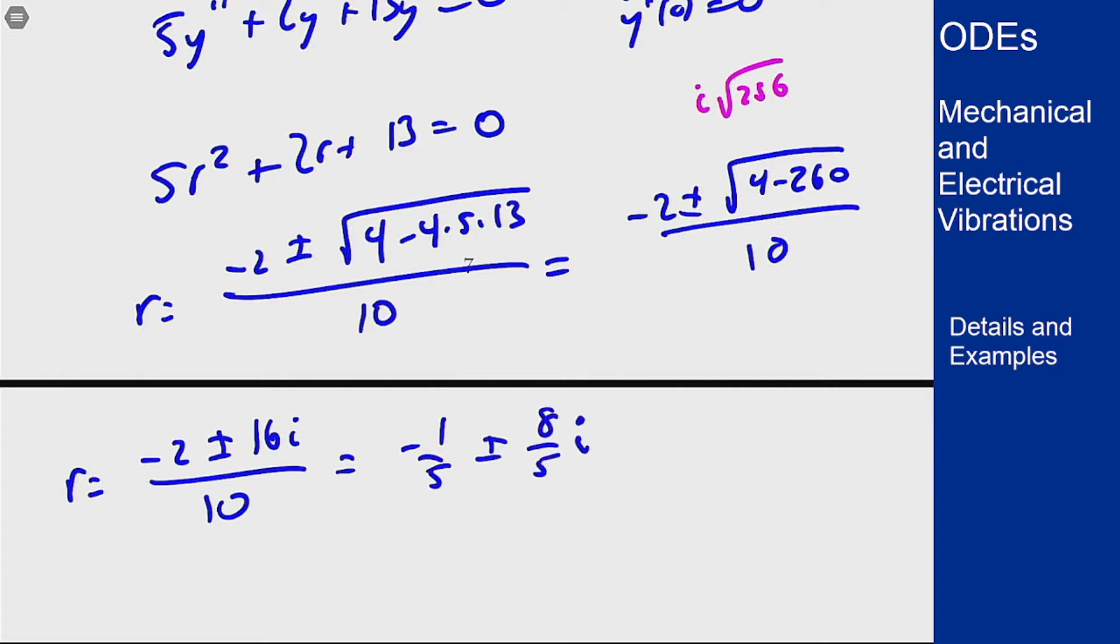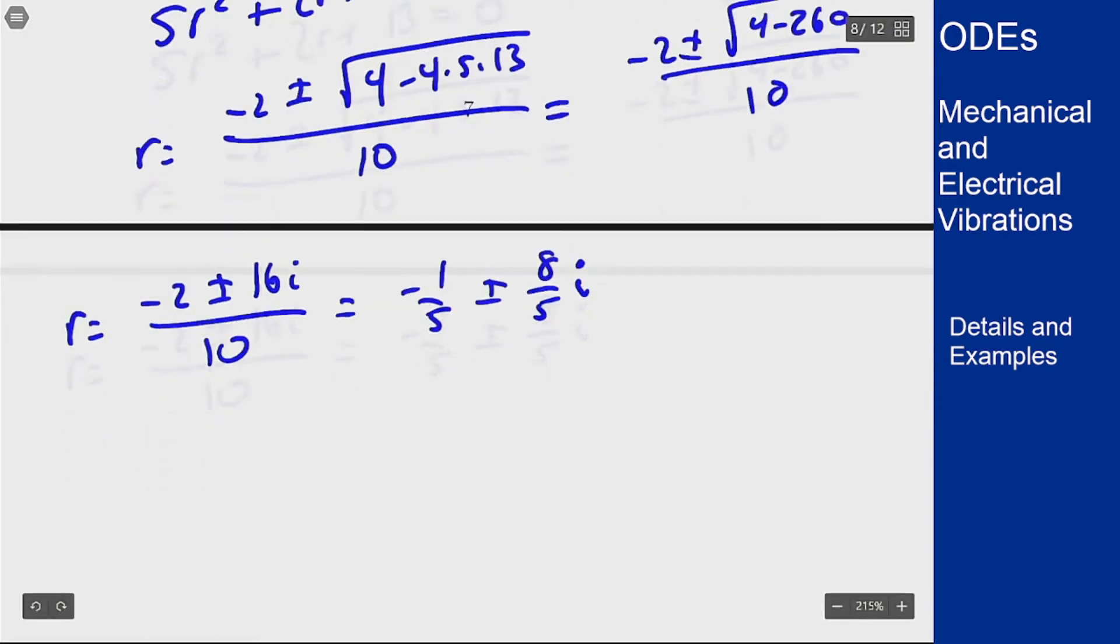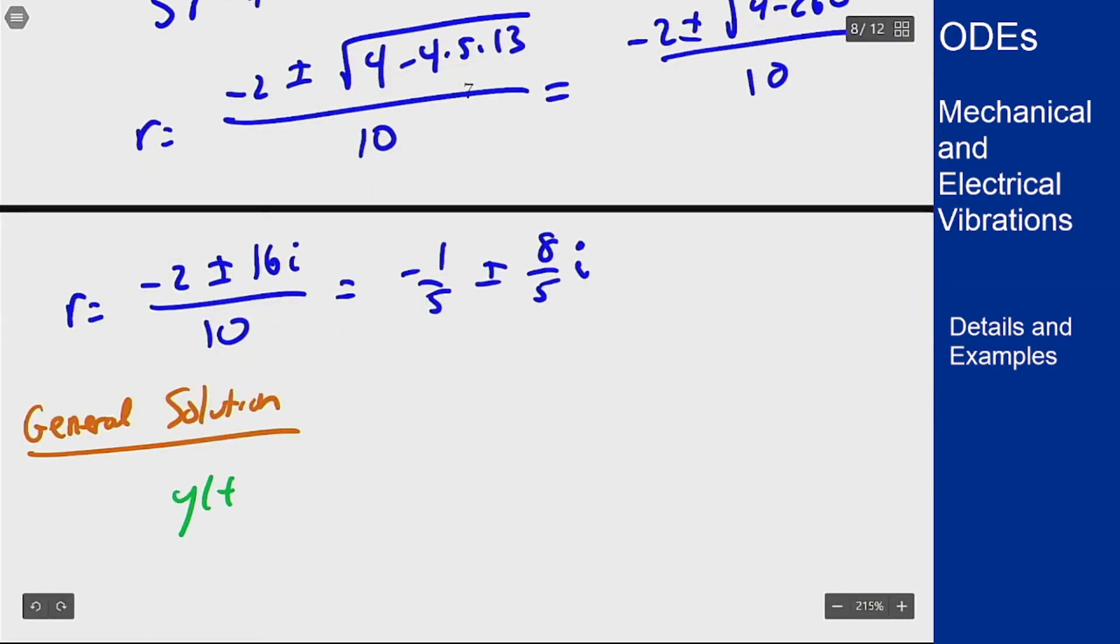So what that means I can write my general solution to this equation as y of t is c1 e to the minus 1 fifth t cosine of 8 fifths t plus c2 e to the minus 1 fifth t sine of 8 fifths t.